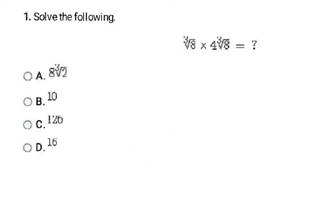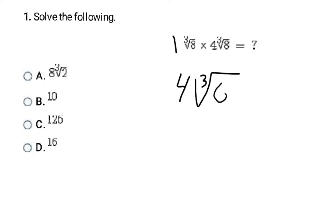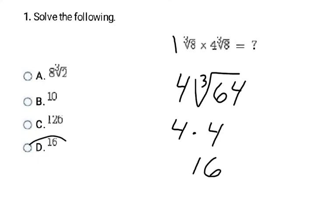Looking at our first example, we're going to multiply these. First, I'll multiply outside numbers with outside numbers — there's no outside number here, so it's an invisible one, and one times four is four. Then I multiply inside numbers: eight times eight is 64. So I have the cube root of 64. The cube root of 64 is 4, so I have 4 times 4 which is 16 — final answer is D.